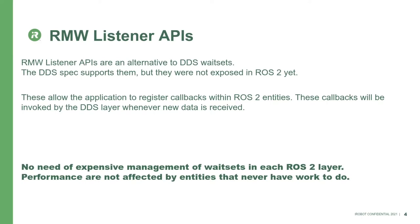First of all, performance is not affected by how many entities we have, because we don't loop over a data structure to see which ones have work to do. If subscription number one has work to do, its callback will be triggered and the callbacks of all other subscriptions will not be affected. The other improvement is that by using the RMW listener APIs, we bypass all the intermediate layers — the API is set by the application into the DDS, and the DDS invokes it directly, so we don't pay for intermediate layer costs.